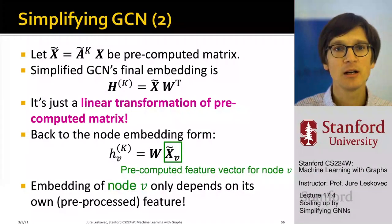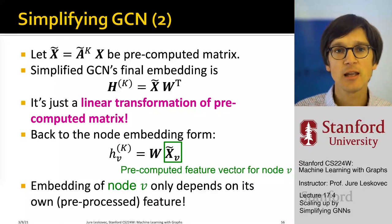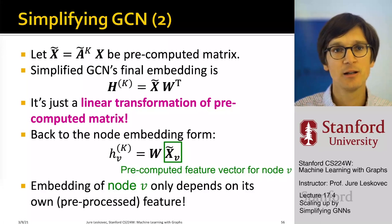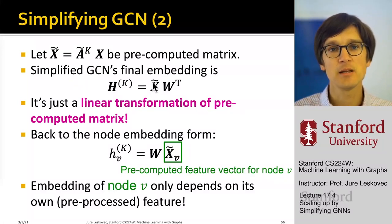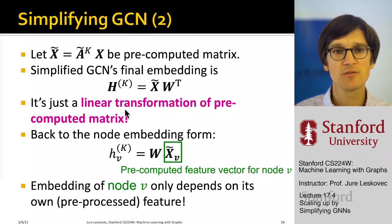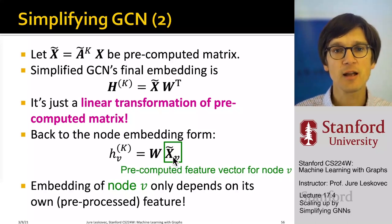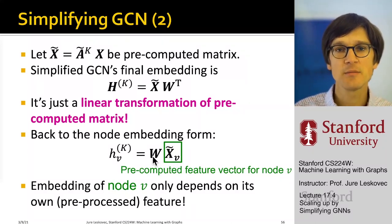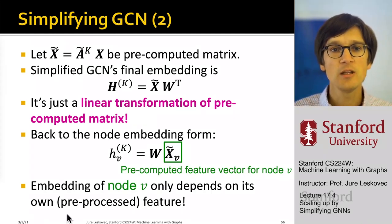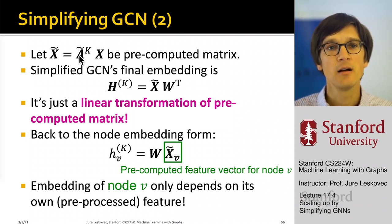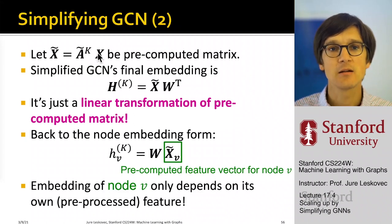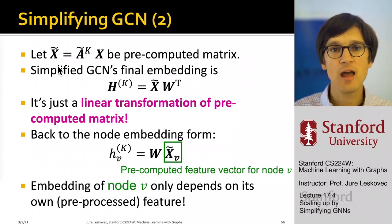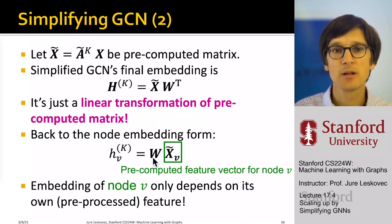What we have learned is that A-tilde to the K times X can be pre-computed — let's call this X-tilde. The simplified GCN's final embedding layer is simply X-tilde times the parameter matrix W. This is just a linear transformation of the pre-computed matrix. The embedding of a given node V is simply its pre-computed feature row in X-tilde times the learned matrix W. The embedding of node V only depends on its own pre-processed features, where X-tilde is computed by A-tilde raised to the power K times X. This matrix has one row for every node.